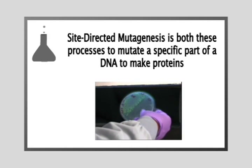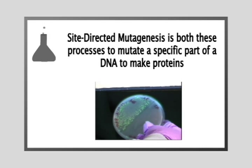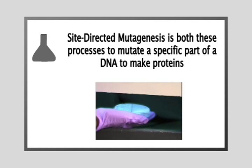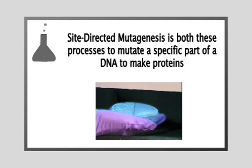Site-directed mutagenesis is the combination of both these processes to mutate a specific part of a DNA plasmid and then transform it into E. coli to produce the newly designed proteins.